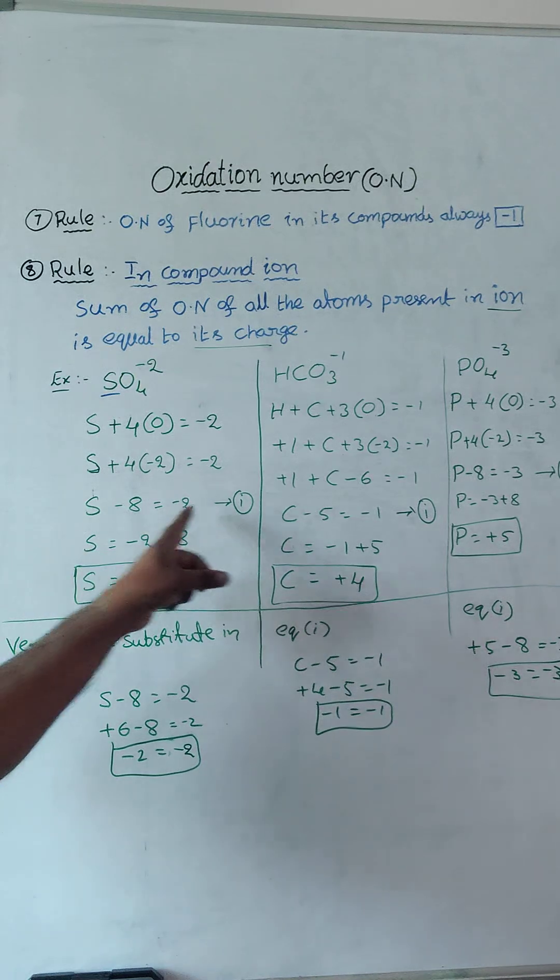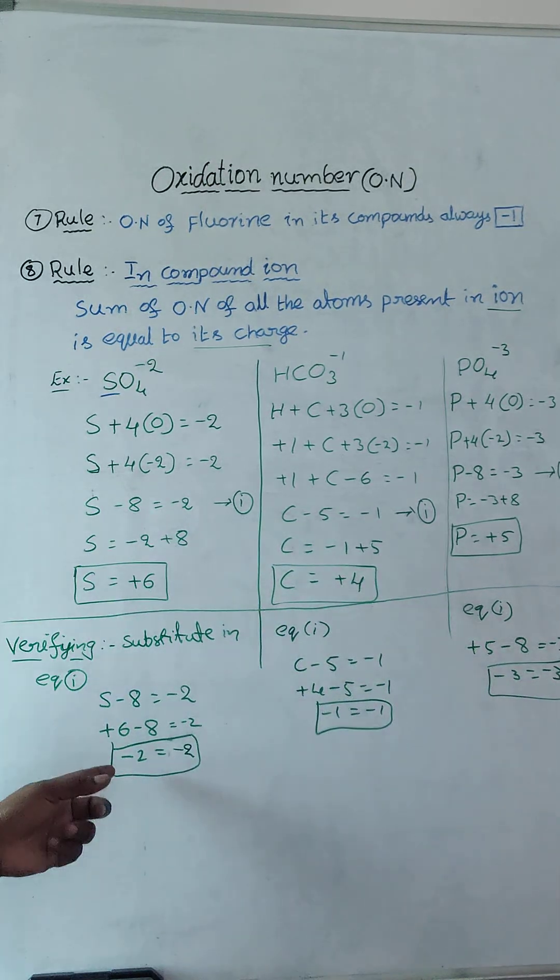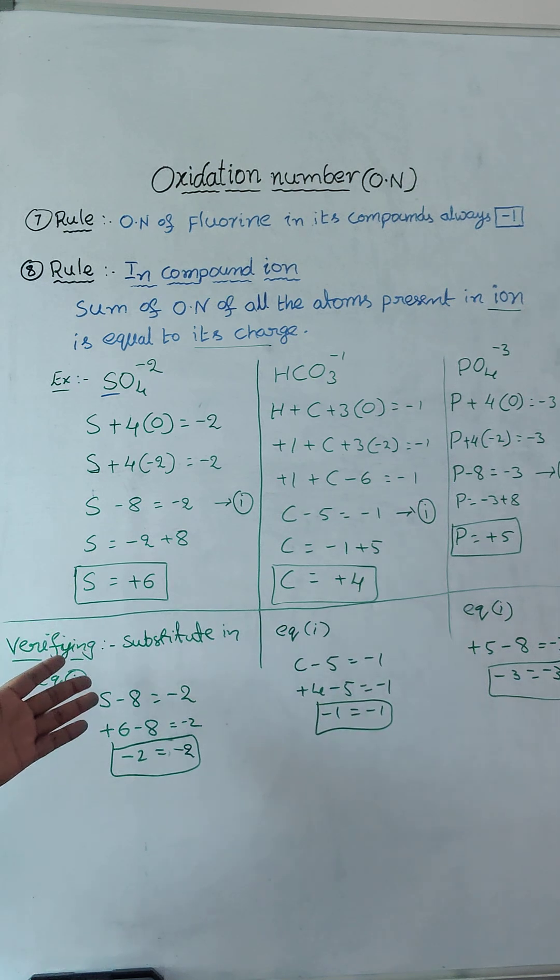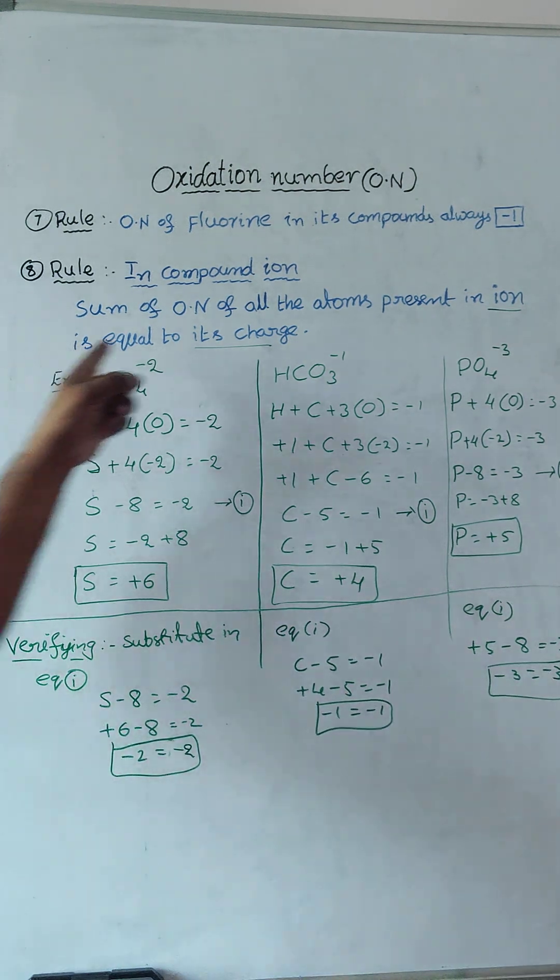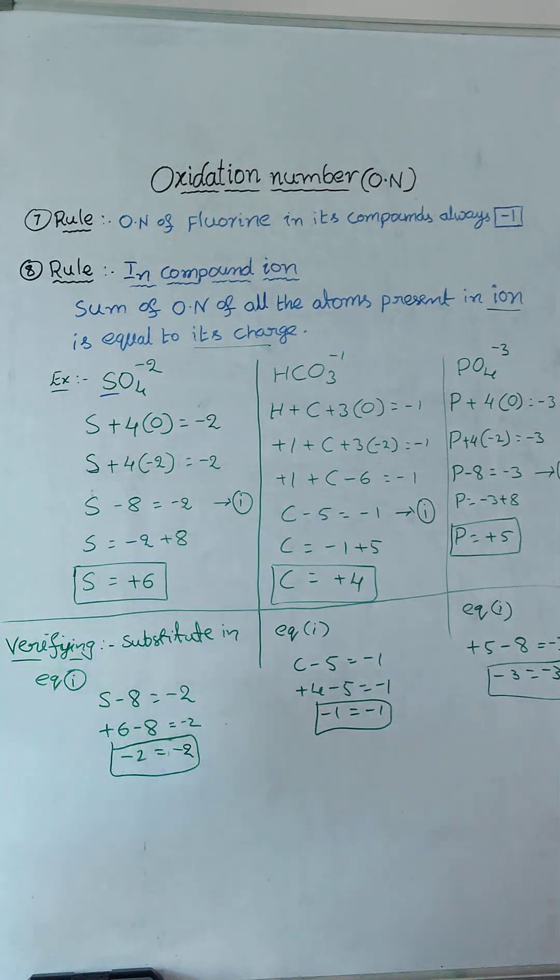If that plus 6 you substitute in equation 1, you will get same charge minus 2. Because what we calculated? That is equal to its charge. Sum of oxidation number of all the atoms present in ion is equal to its charge.